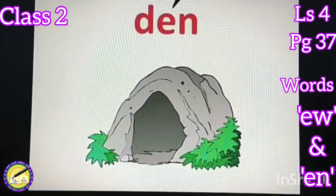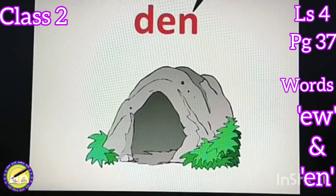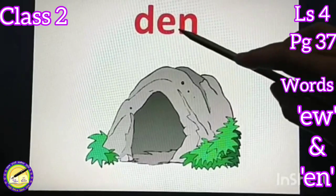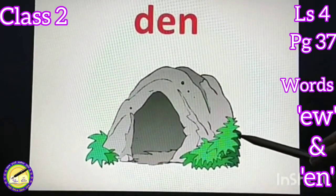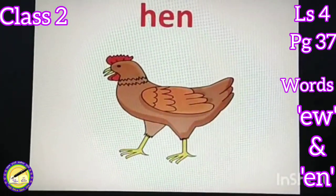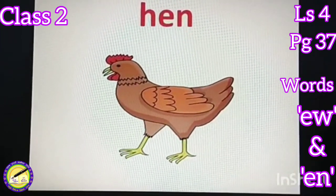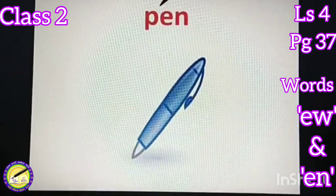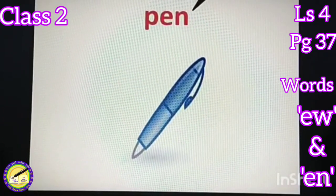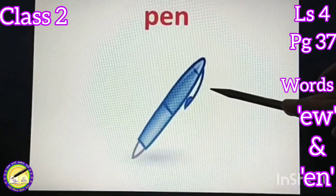Now the words ending sound with N. D-E-N, Den. Den means gufa. H-E-N, Hen. Hen means murgi. P-E-N, Pen. You all know jithi naal ma'am, tho nu kaam deen deen. Pen.